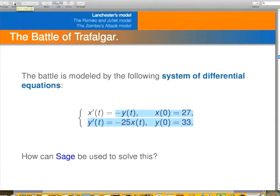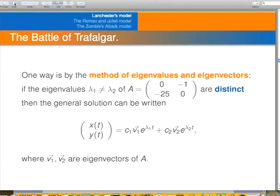And so let's take a look at this system right here. We'll solve it using SAGE and the method of eigenvalues and eigenvectors. Our matrix A is a matrix of coefficients here. We want to find the eigenvalues and eigenvectors of that.